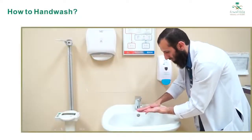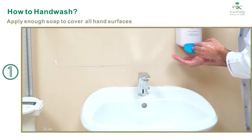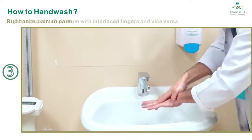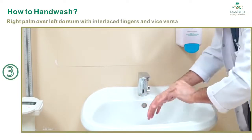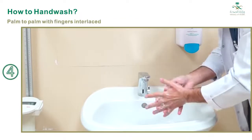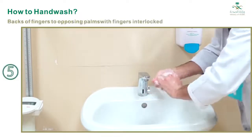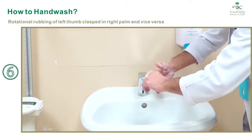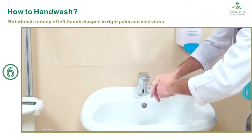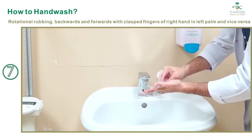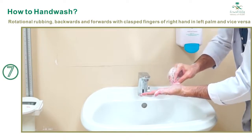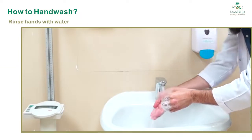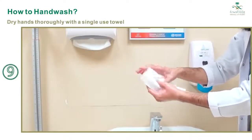How to Hand Wash: 1. Wet hands with water. 2. Apply enough soap to cover all hand surfaces. 3. Rub hands palm to palm. 4. Right palm over left dorsum with interlaced fingers and vice versa. 5. Palm to palm with fingers interlaced. 6. Backs of fingers to opposing palms with fingers interlocked. 7. Rotational rubbing of left thumb clasped in right palm and vice versa. 8. Rotational rubbing backwards and forwards with clasped fingers of right hand in left palm and vice versa. 9. Rinse hands with water. 10. Dry hands thoroughly with a single-use towel.